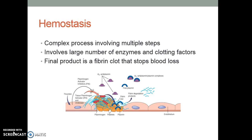Now we're going to talk with a little hemostasis review. It's a complex process and it does involve multiple steps. I took an advanced patho class once and the first essay question on the first test was to describe the coagulation pathway, and I kind of froze up because there are multiple steps, a lot of enzymes and clotting factors, and the final product is a fibrin clot that keeps you from losing blood. So it's not just about the platelets — there's a lot of other things that go into it.